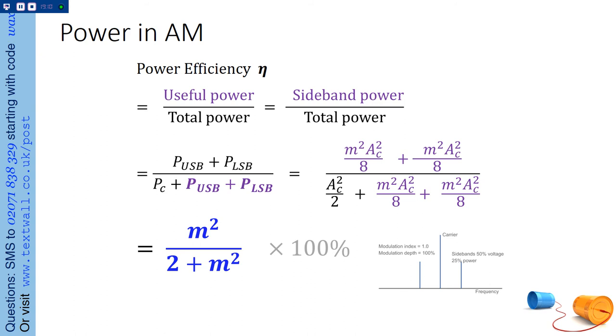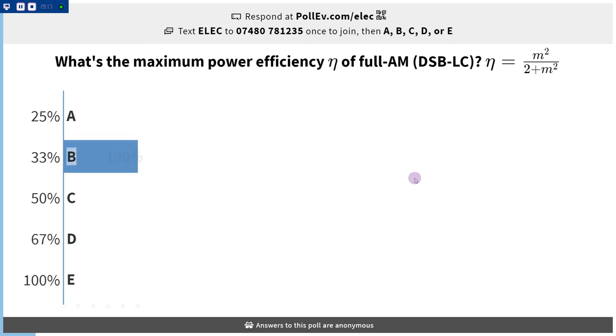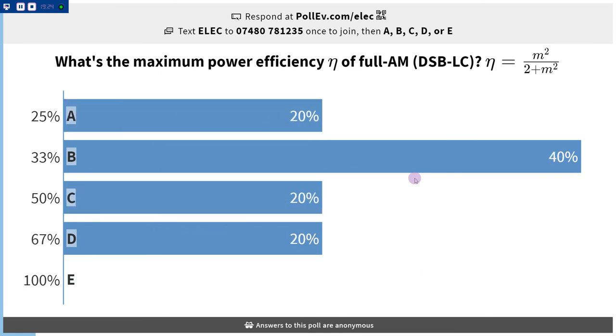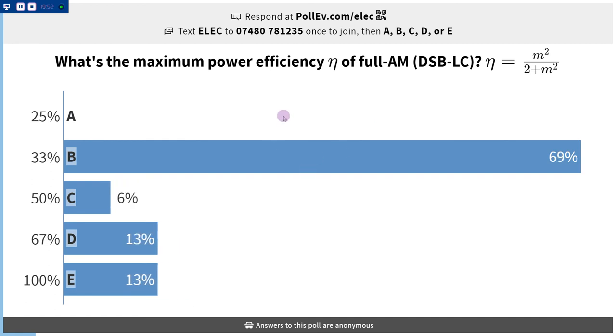Now, ask yourselves, how high can that power efficiency be? What's the maximum power efficiency? For AM, can we achieve 100% power efficiency? How close to 100% can we get? So look at that formula and ask yourself, what's the most efficient? So the most, the best modulation is when M is 100%, so M is 1. So you'll have 1 squared over 2 plus 1 squared. So that's 1 third, or 33.3%. So the best efficiency we can achieve is 33.3%. That means 67% of the power is wasted.